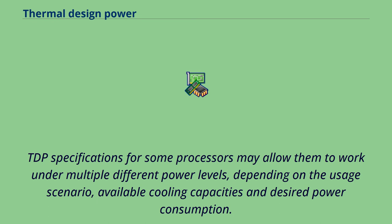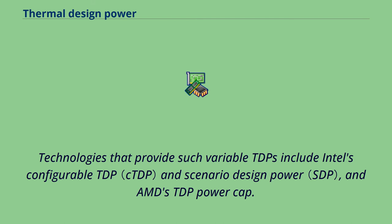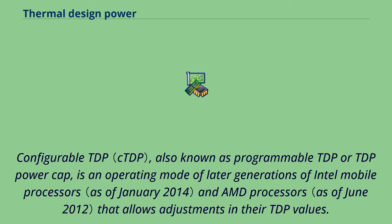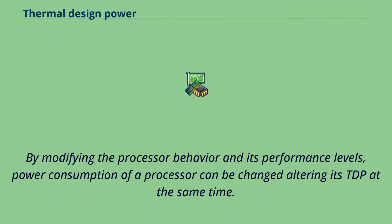TDP specifications for some processors may allow them to work under multiple different power levels, depending on the usage scenario, available cooling capacities, and desired power consumption. Technologies that provide such variable TDPs include Intel's Configurable TDP and Scenario Design Power and AMD's TDP Power Cap. Configurable TDP, also known as Programmable TDP or TDP Power Cap, is an operating mode of later generations of Intel mobile processors and AMD processors that allows adjustments in their TDP values. By modifying the processor behavior and its performance levels, power consumption of a processor can be changed, altering its TDP at the same time.